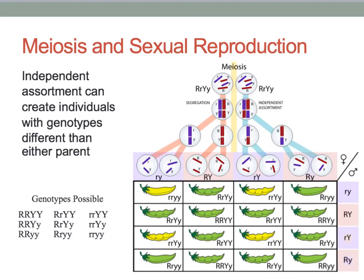If both parents have a genotype big R, little r, big Y, little y, then they can create four different gametes. Each of these four can combine with any other four from the parents, creating nine total combinations. Remember that organisms have different genes, creating almost countless possibilities of offspring.